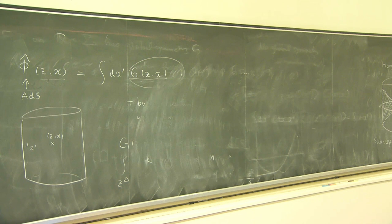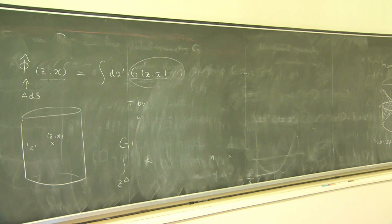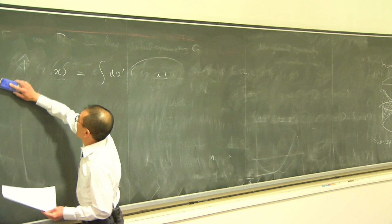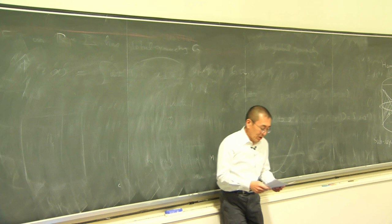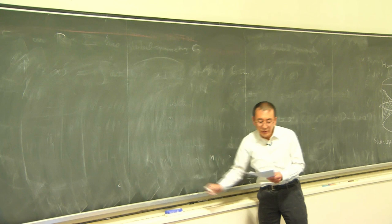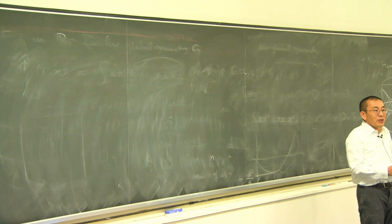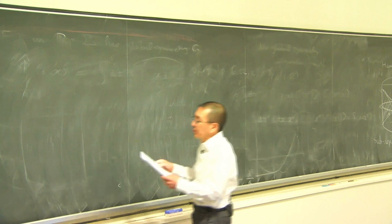The original motivation was the causal wedge, and it was understood later that you can extend it to the entanglement wedge. In general the entanglement wedge is larger than the causal wedge, and in fact the bulk sub-region duality extends to the entanglement wedge. But for what I'm going to talk about, the distinction is not critical — what matters is that sub-region duality exists, and it leads to the following paradox.